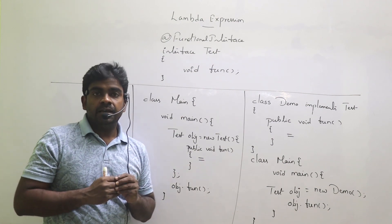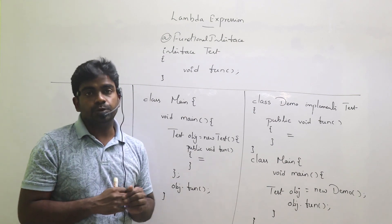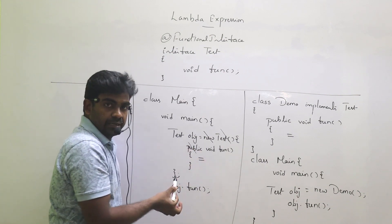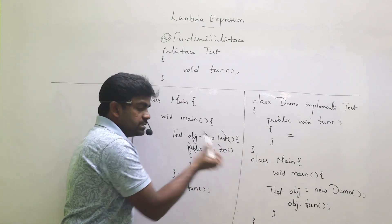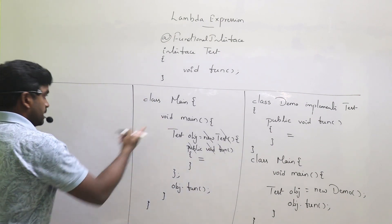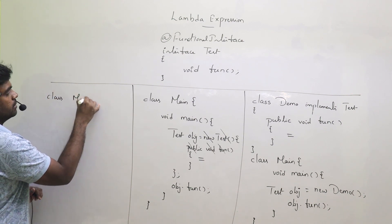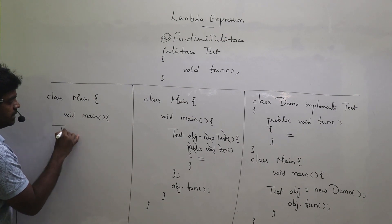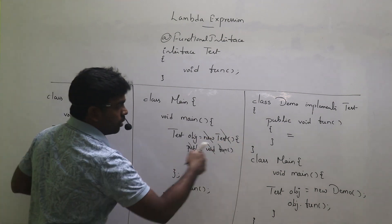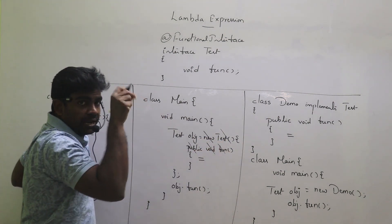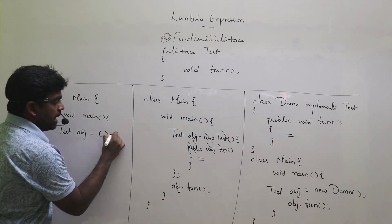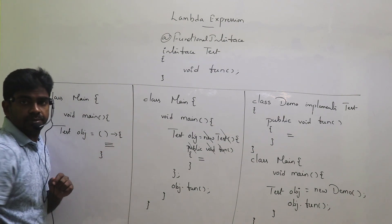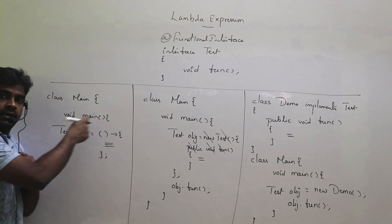But since JDK 8, we can more simply implement the functional interface using lambda expression. They removed the 'new' keyword, the constructor call, the public access modifier, the return type, and the method name. So in the same main class and main method, we write: Test obj = () -> { body }. This is called a lambda expression.